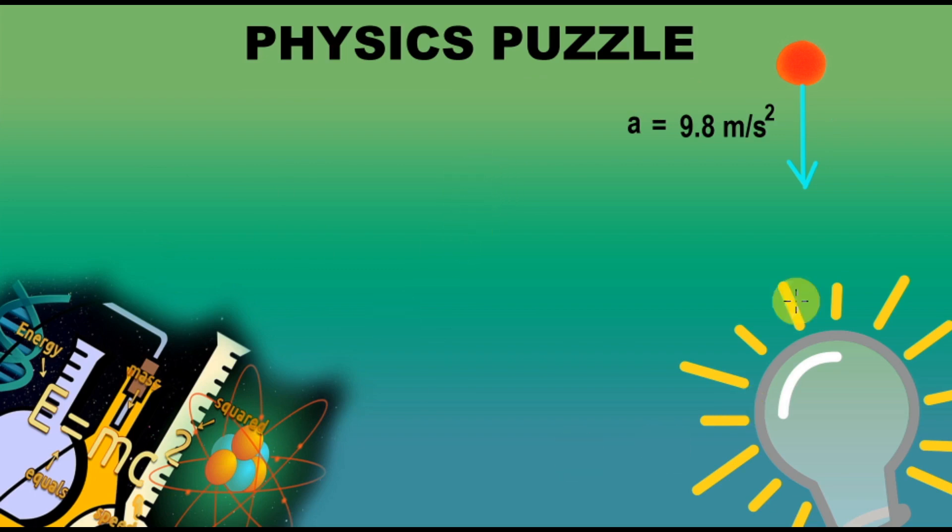The question is this. This is a ball at rest above ground, which is about to be released. And when it is released, its acceleration is 9.8 meter per second square, as we all know.